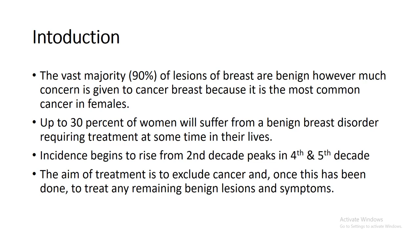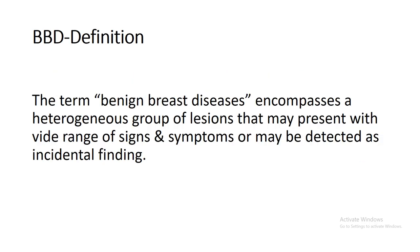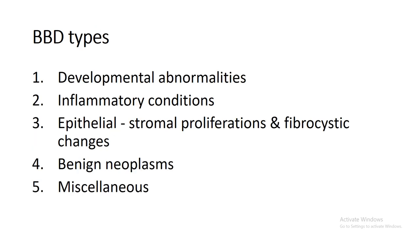Since breast cancer is the most common cancer in females, the aim of treatment in benign diseases is first to exclude cancer, and once cancer has been excluded, treat the remaining benign conditions. Benign breast disease is an umbrella term encompassing a heterogeneous group of lesions that may present with a wide range of signs and symptoms or may be detected as incidental findings. They can be broadly classified into five groups: developmental abnormalities, inflammatory conditions, epithelial-stromal proliferation and fibrosis changes, benign breast neoplasms, and miscellaneous conditions.